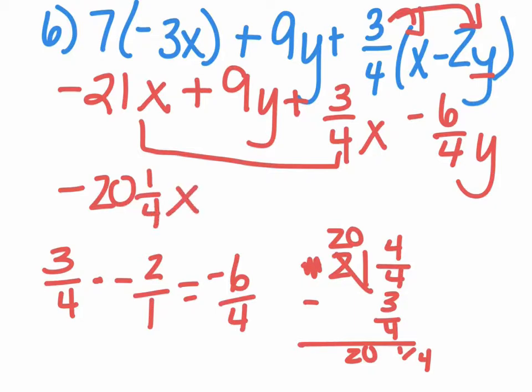Now I'm going to combine my y's. I have 9y and negative six-fourths y. So I'm going to change negative six-fourths into negative 1 and 2 fourths, which is negative 1 and a half.